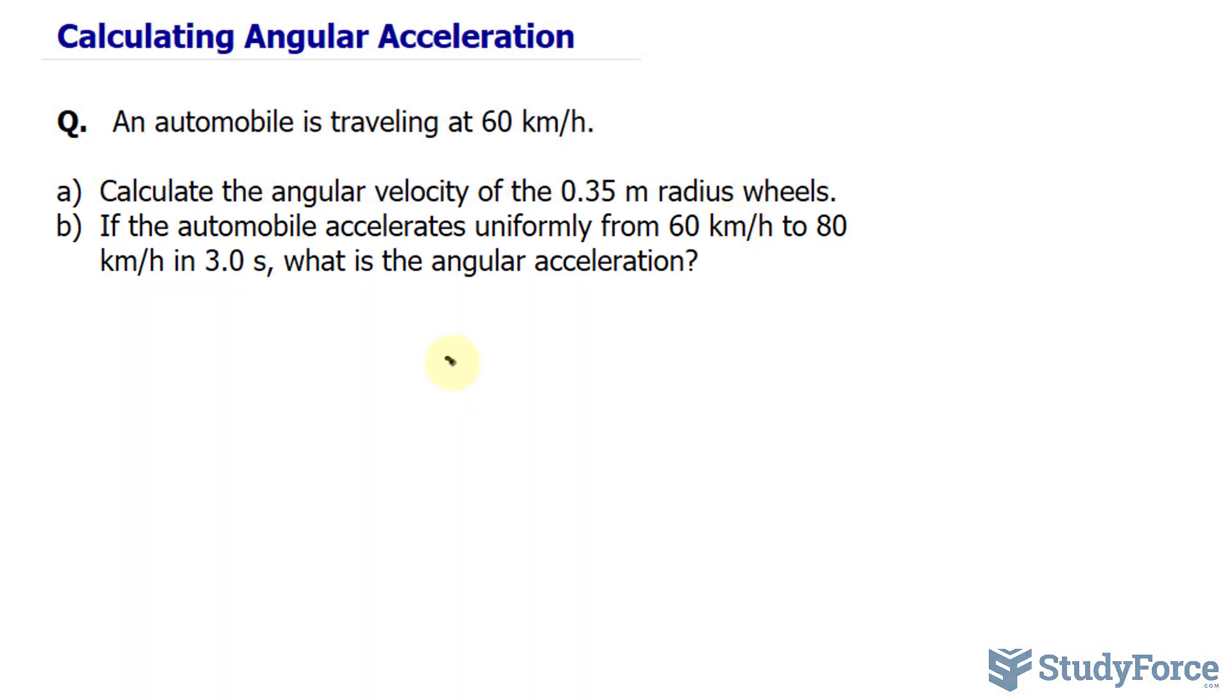Starting with A, I'll denote the angular velocity using the Greek letter omega. That's the lowercase omega. And that is equal to the linear velocity, which they tell us in the question to be 60 kilometers an hour. So I'll represent that as V over the radius. The radius is 0.35 meters.